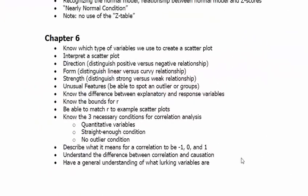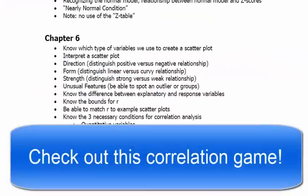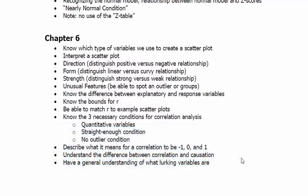Be able to match R to example scatterplots. There are some cool examples online. If you do scatterplot guessing into Google, you might be able to look at some there. But just being able to analyze and look at, okay, this looks like the R for it could be, I don't know, 0.8. That definitely means it's positive linear correlation that's pretty strong. So knowing what's going on there.